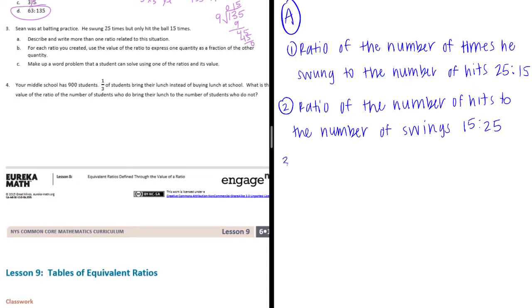Let's make one more. So if he hits the ball 15 times out of 25 times, that means that the other 10 times he swung and missed. So let's say the ratio of the number of hits to the number of misses is, so the number of hits would be 15 and the number of misses would be 10.